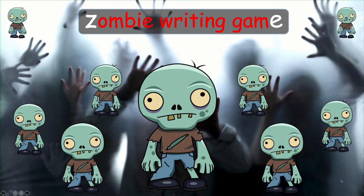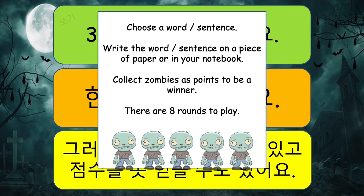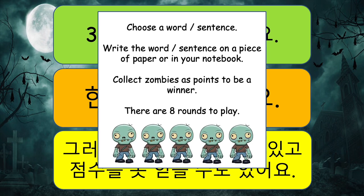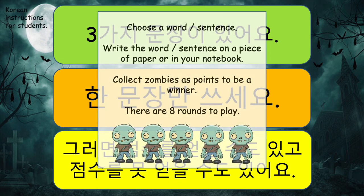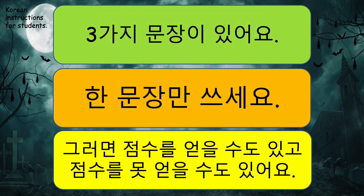The way this game works is there's an introduction in English. Students will choose one word or sentence and then write it on a piece of paper, in their English notebooks, or in their book if they can find some space. There are also Korean instructions, which are very useful for students to understand the game, and for the Korean teacher as well. As it says in Korean: there are three sentences — choose one, write a sentence, then get the points.